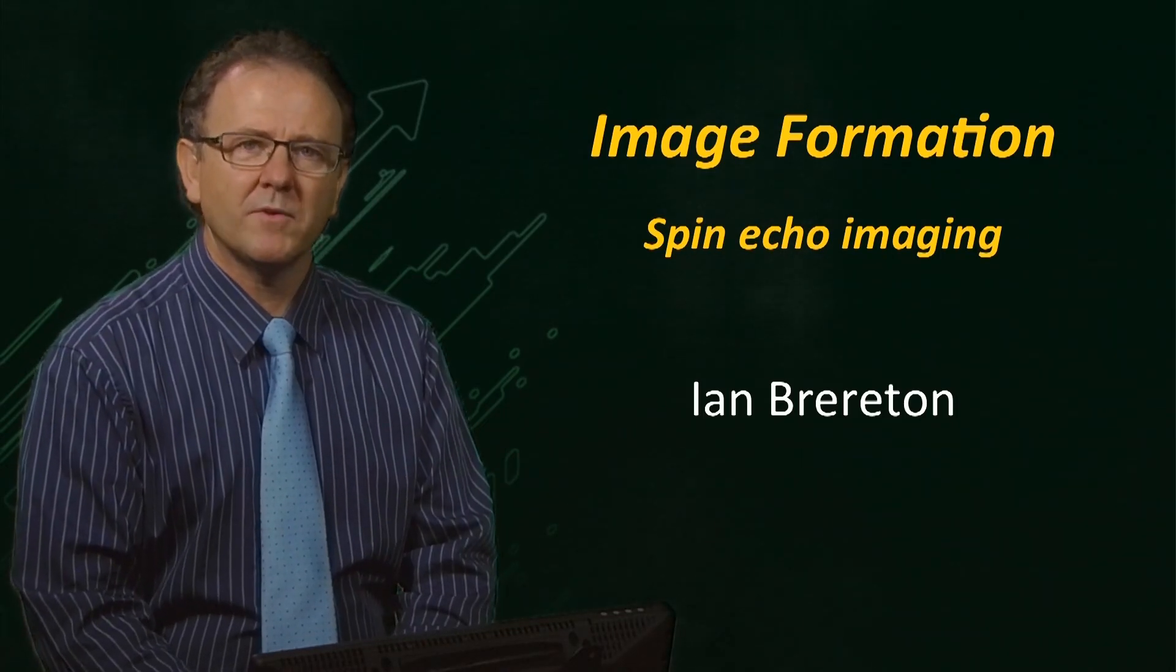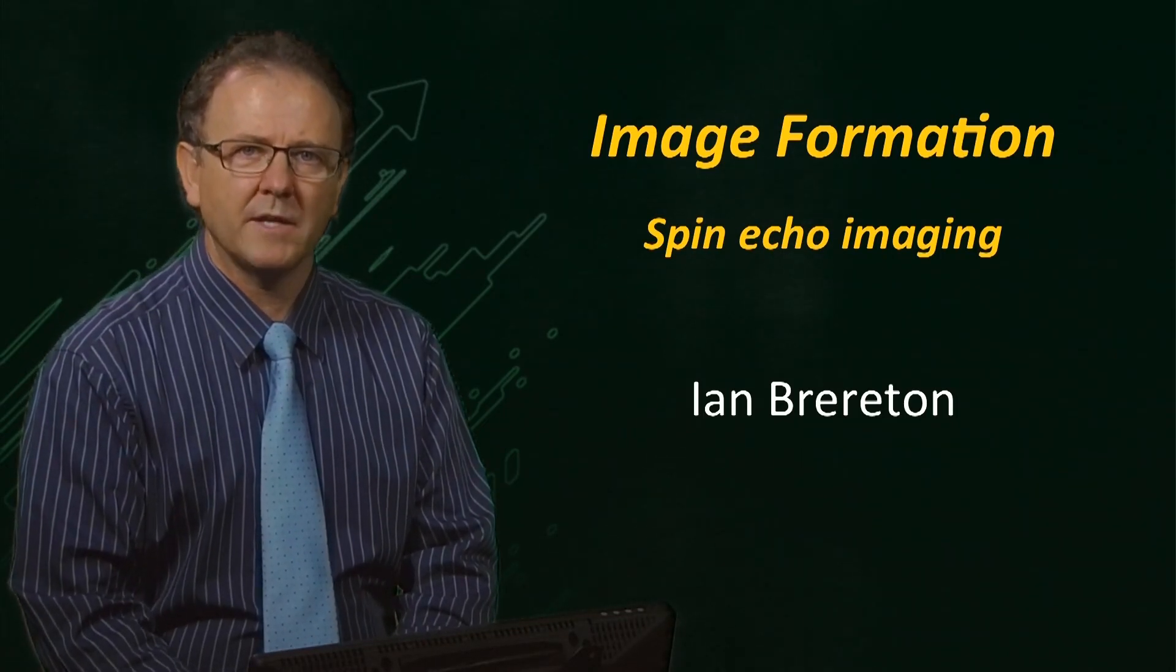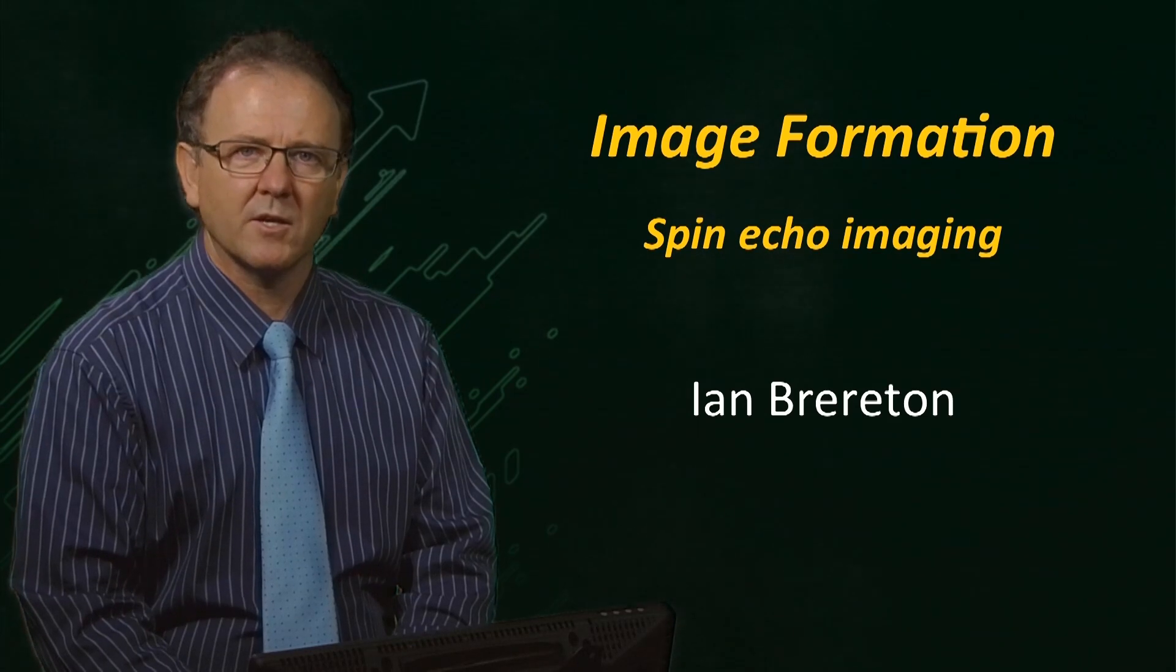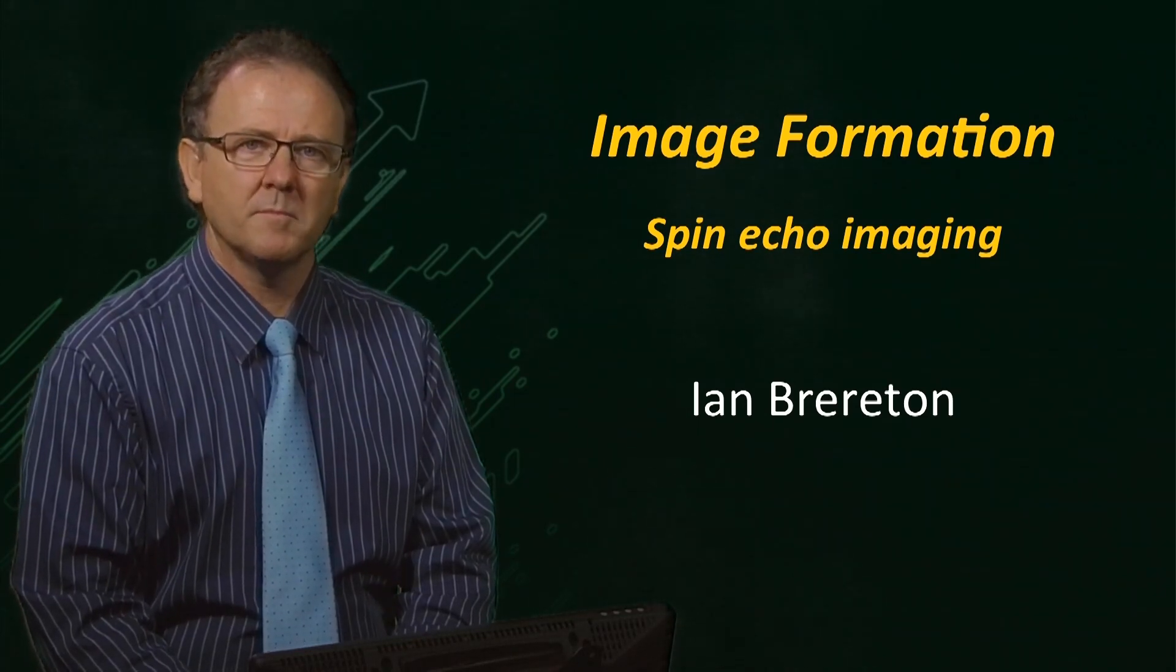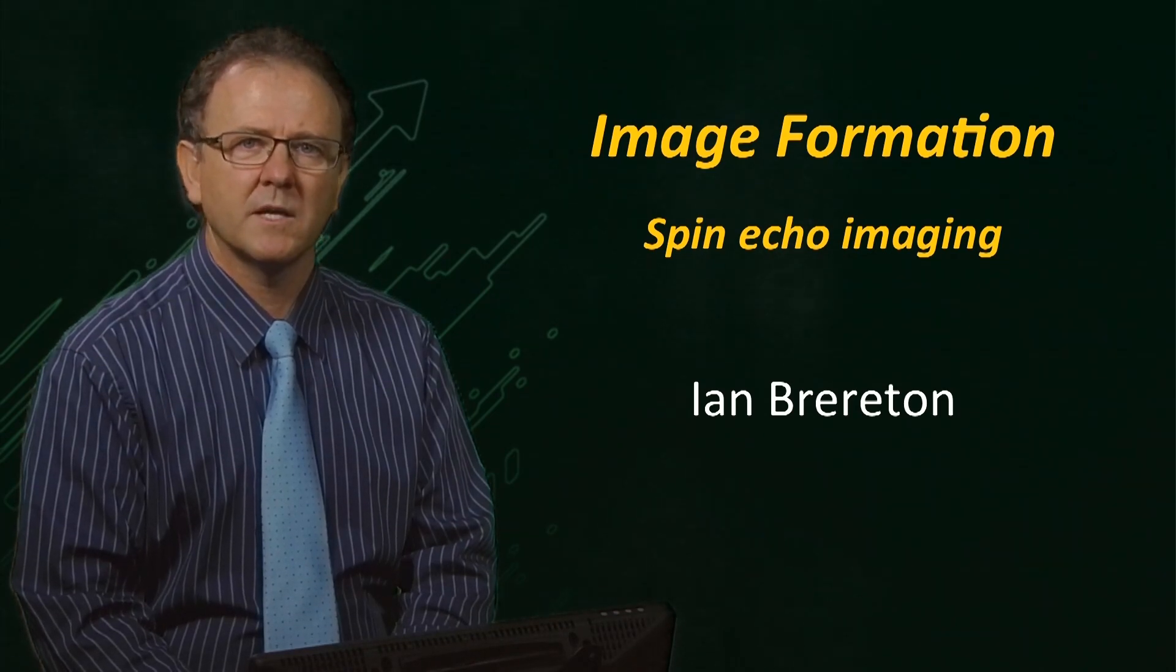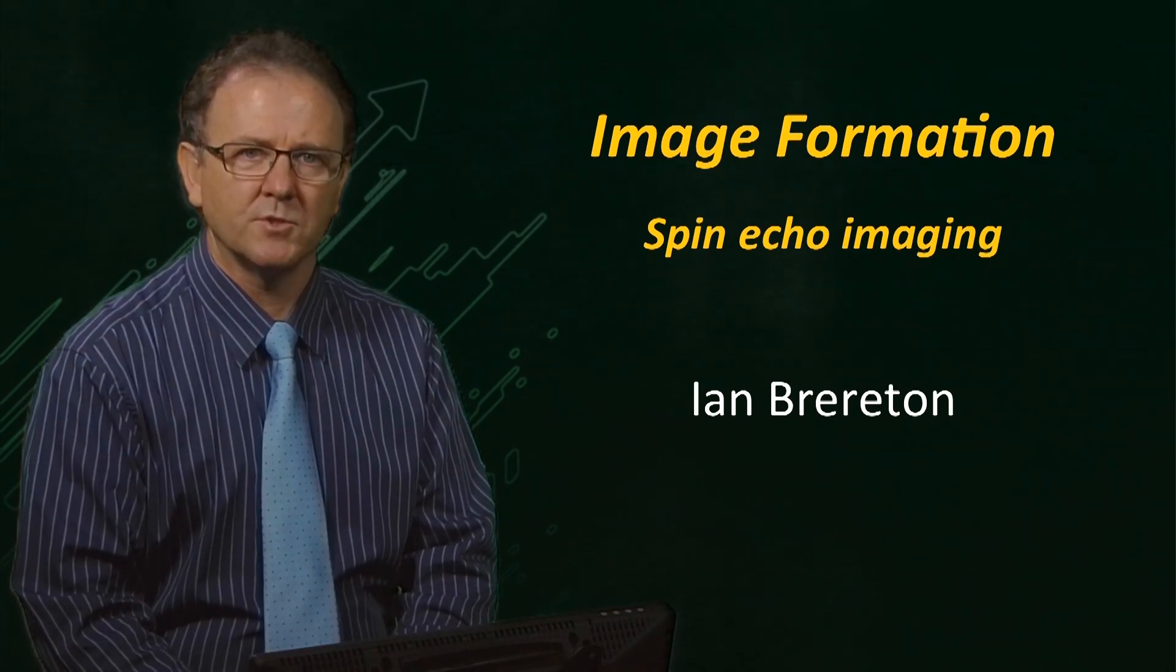Hello again. In the previous video, we described how gradients are used to spatially encode the signal in the read and phase directions. We now describe how the image data is acquired with a pulse sequence and Fourier transformed to produce an image.